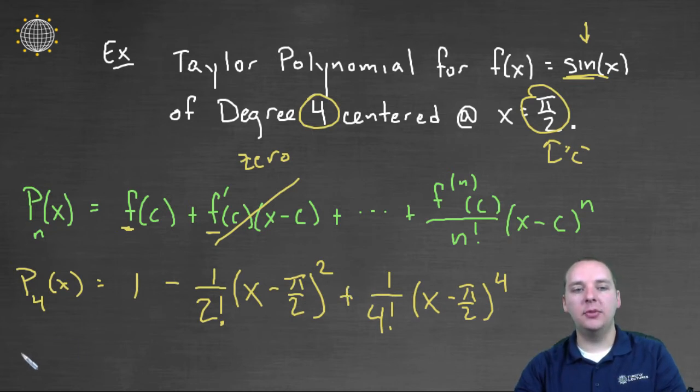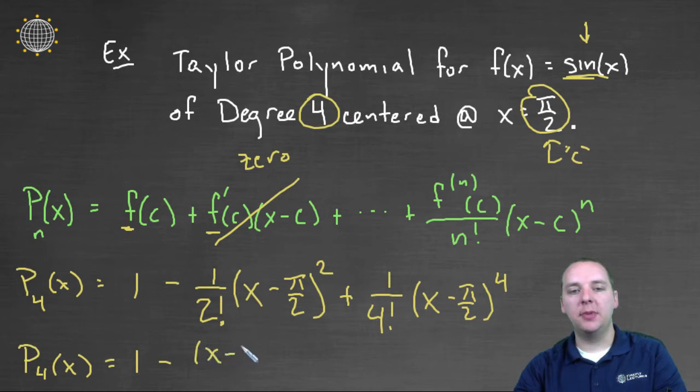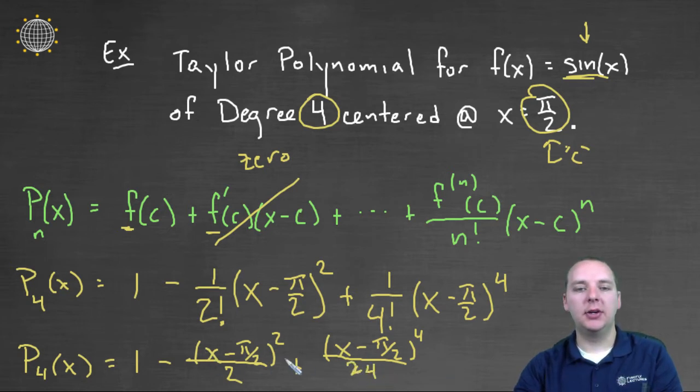If you wanted to clean this up just a little bit, you could turn the factorials into actual numbers. You could say one minus x minus pi over two squared all over two, plus x minus pi over two to the fourth over twenty-four. This would be your polynomial of degree four.